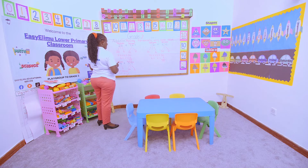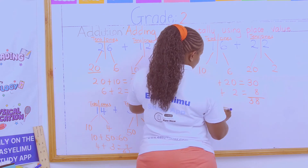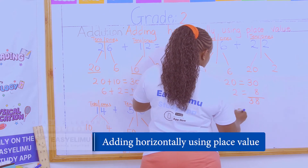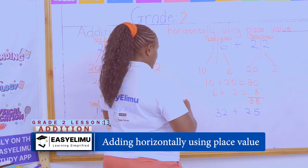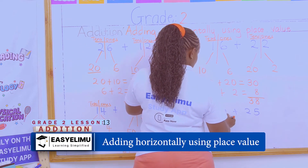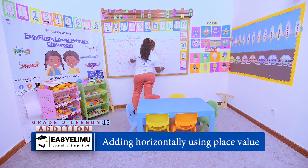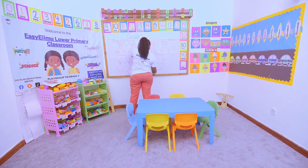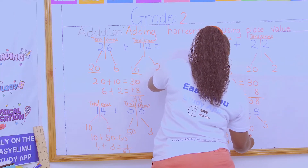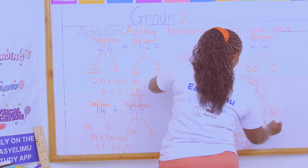So 14 plus 53 gives us 67. Now, 32 plus 25 — same method: split your number into tens and ones. Three tens equals 30, two ones equals 2, two tens equals 20, five ones equals 5. Add the tens: 30 plus 20 equals 50. Add the ones: 2 plus 5 equals 7. Total is 57.